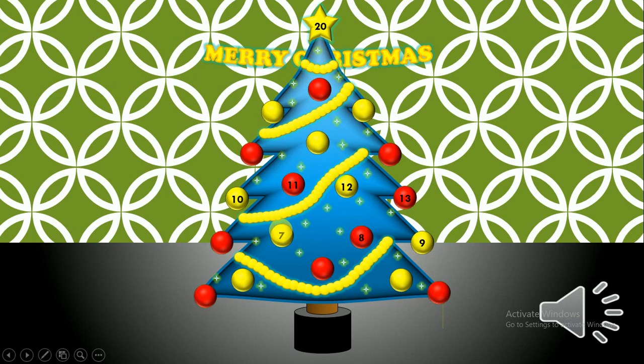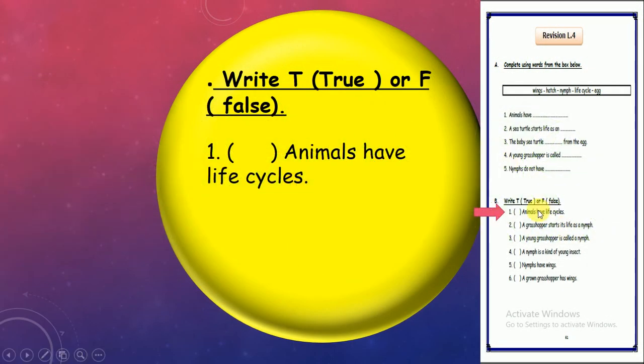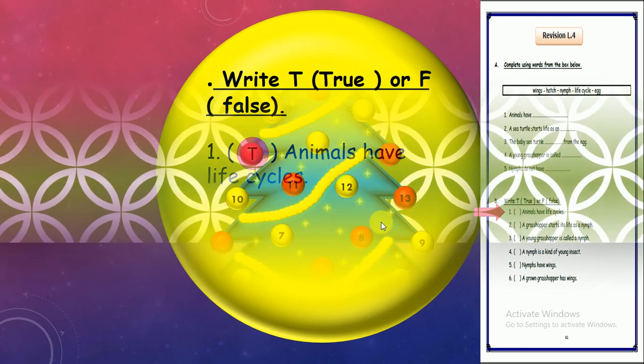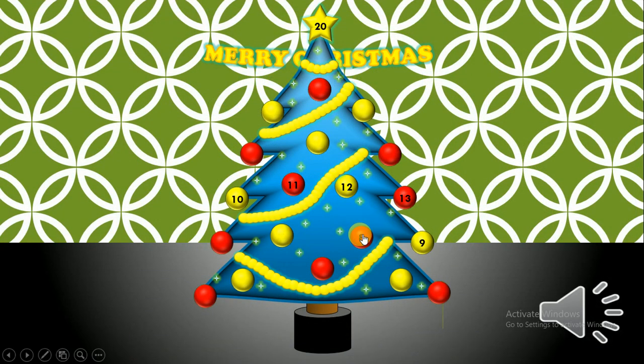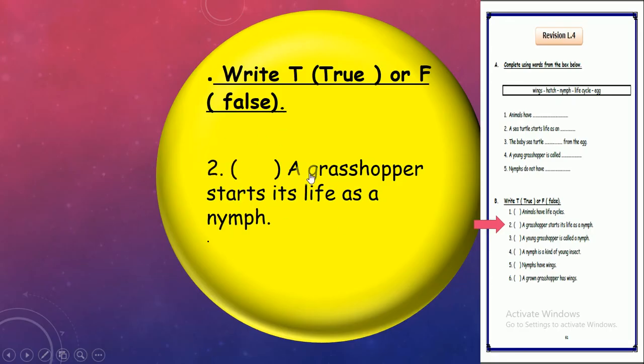Let's try number 7, true or false. Here on page 61: Animals have life cycle. True. Of course, any creature or any living thing have life cycle. Number 8, it's 2, true or false: Grasshopper nymph starts its life as a nymph. No, as an egg. So it's false.